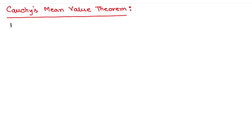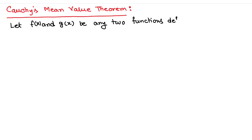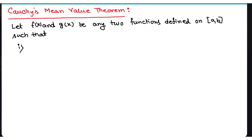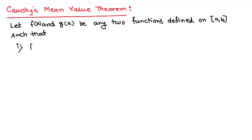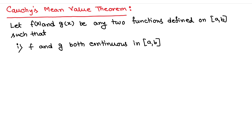Let's write the statement. Let f(x) and g(x) be any two functions defined on closed interval [a, b], such that: first condition — f and g are both continuous in closed interval [a, b]; and number two — f and g are both differentiable in open interval (a, b).